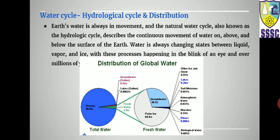In the hydrological cycle, due to sunlight, all the water on the surface vaporizes, condenses in the form of clouds, and then comes back as rain to the earth. This is how water is recycled in the atmosphere — continuous movement of water on and below the surface, always changing state between liquid, vapor, and ice. This process happens continuously over millions of years.